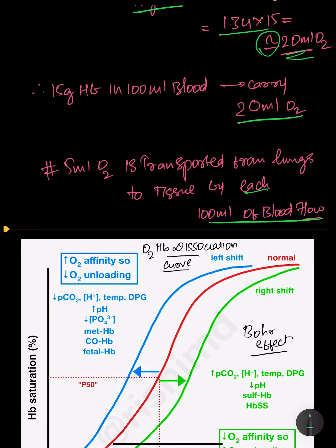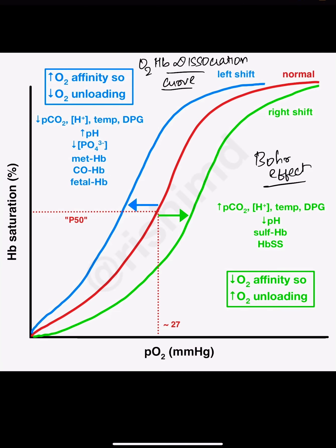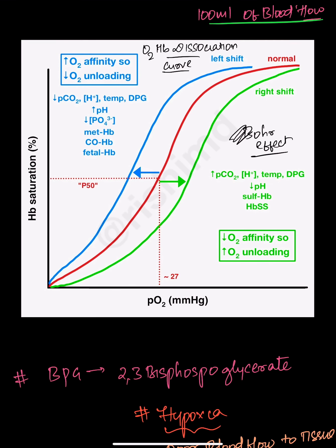Now I'd like to discuss the most important concept: the oxyhemoglobin dissociation curve. There are factors which cause dissociation of oxygen from hemoglobin. Increased concentration of carbon dioxide and H⁺ ions in the blood causes dissociation of oxygen from hemoglobin to the tissues — this effect is called the Bohr effect. The Bohr effect is mainly operative at the tissues for the release of oxygen from hemoglobin to supply the tissues.